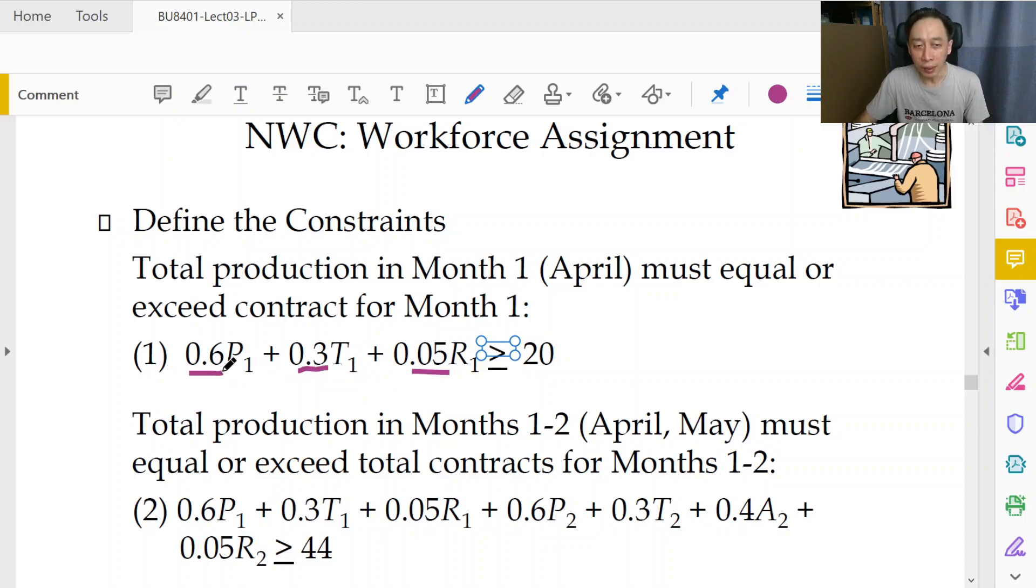Now if the left hand side after solving turns out to give us a number such as 22, then we say using the terms that we have learned we say that there is a surplus of two wings. So for the month of April we can definitely deliver the order and we have two wings in excess.